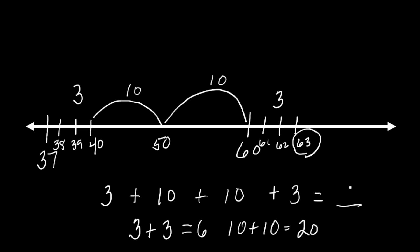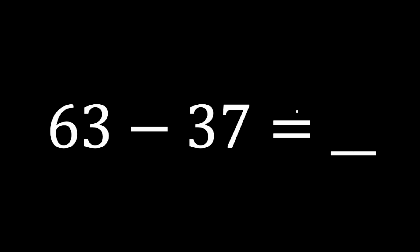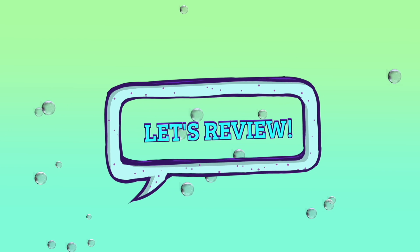And then I can just add in my head: 20 plus 6 gives us 26. So when we went from 37 to 63, we moved 26 on the number line. In our addition number sentence, we would start at 37, we add 26, and that takes us to 63. 37 plus 26 equals 63. When we change that to our subtraction number sentence, 63 minus 37 gives us our missing addend, 26.